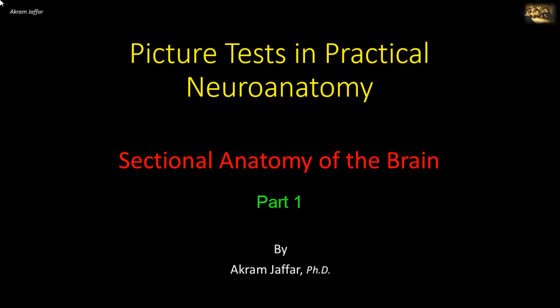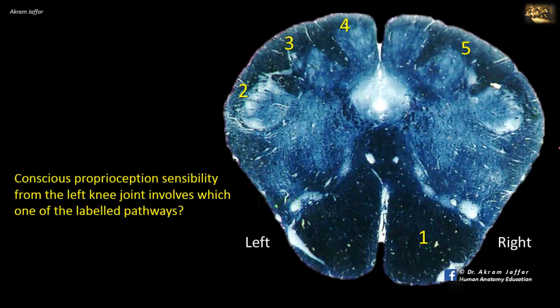I will deal with the sectional anatomy of the brain. Conscious proprioception sensibility from the left knee joint involves which of the labeled pathways? This is a section of the caudal part of the medulla oblongata at the level of sensory decussation.